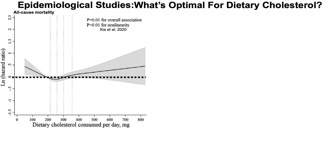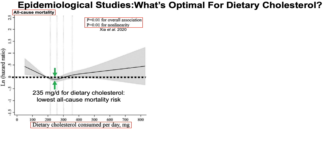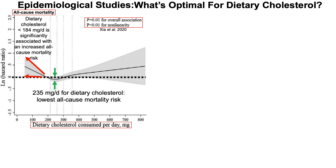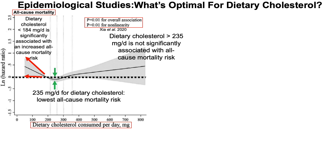Looking at the SIA study, now we're looking at all-cause mortality risk plotted against dietary intake of cholesterol on the x-axis. With the p-values, we have statistical significance. When dietary cholesterol intake was 235 milligrams per day, that was associated with the lowest all-cause mortality risk. A significantly increased all-cause mortality risk was associated with dietary cholesterol intakes less than 184 milligrams per day. And higher values — above 235 milligrams per day — were not significantly associated with any effect on all-cause mortality risk.